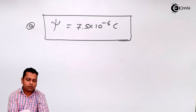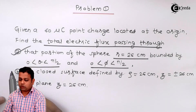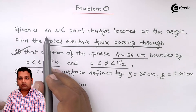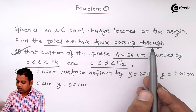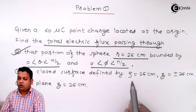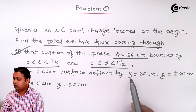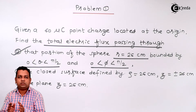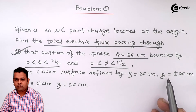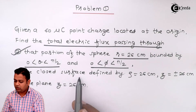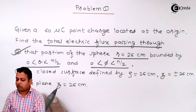Now let us focus on part B. The problem: given a 60 microcoulomb point charge at the origin, find the total electric flux passing through the closed surface defined by rho equal to 26 cm and z equal to plus or minus 26 cm. The rho and z combination means these are representations in cylindrical coordinates. So we first judge how the closed surface looks, then calculate the total electric flux.